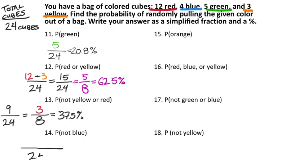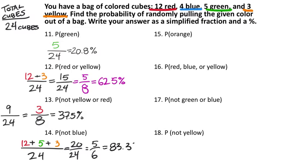The probability of not blue: add the reds (12), greens (5), and yellows (3), which is 20 out of 24. Both are divisible by 4, so that simplifies to 5/6, which is approximately 83.3%. The probability of orange: there are no orange cubes in the bag, so that's 0 out of 24 — a 0% chance.